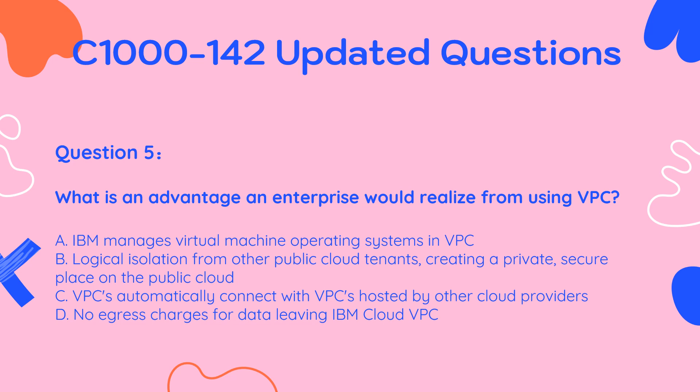Question 5. What is an advantage an enterprise would realize from using VPC? A. IBM manages virtual machine operating systems in VPC. B. Logical isolation from other public cloud tenants, creating a private, secure place on the public cloud. C. VPCs automatically connect with VPCs hosted by other cloud providers. D. No egress charges for data leaving IBM Cloud VPC.